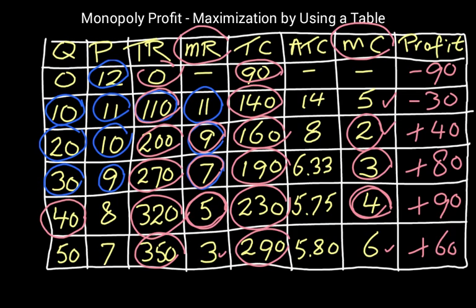So as you can see, the maximum profit is at plus 90. So the quantity is 40 there. We're going to charge a price of $8, that's the best situation for this monopolist.